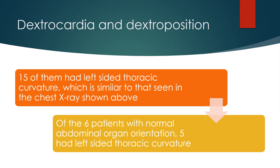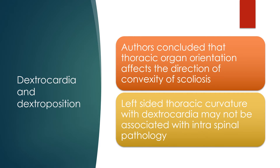Of the 6 patients with normal abdominal organ orientation, 5 had left-sided thoracic curvature. Others concluded that thoracic organ orientation affects the direction of convexity of scoliosis, and left-sided thoracic curvature with dextrocardia may not be associated with intraspinal pathology.